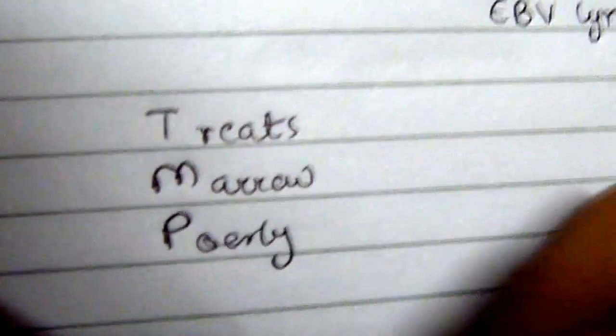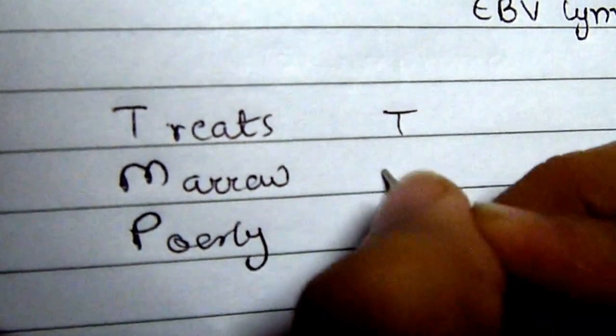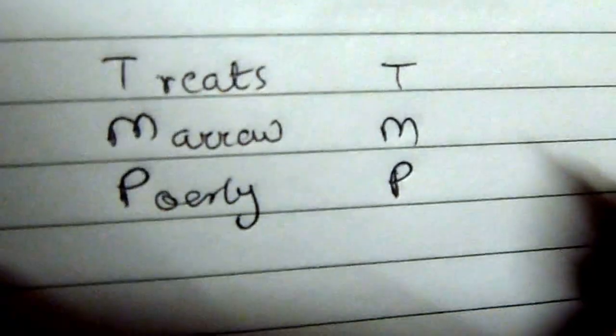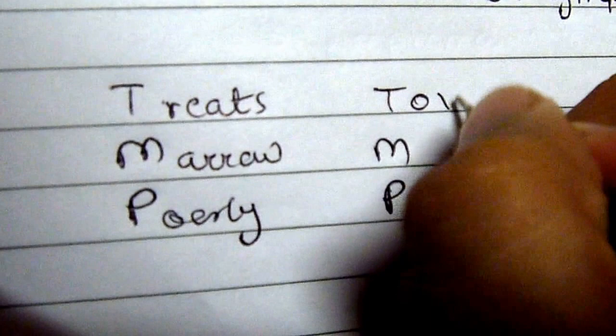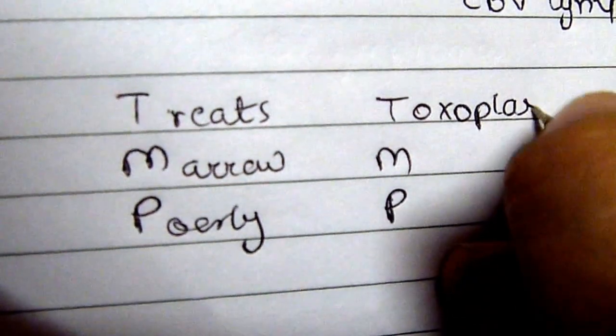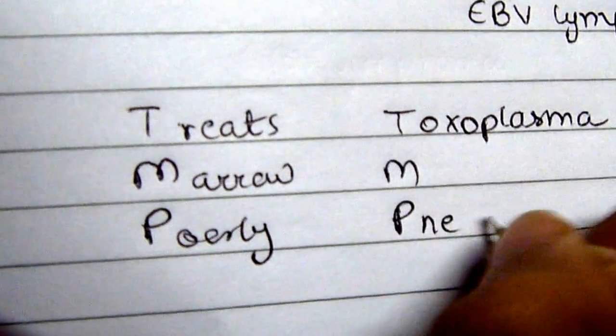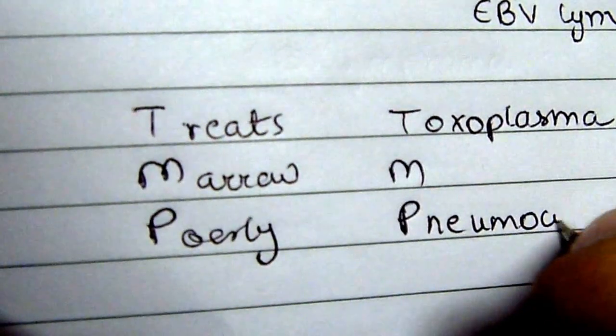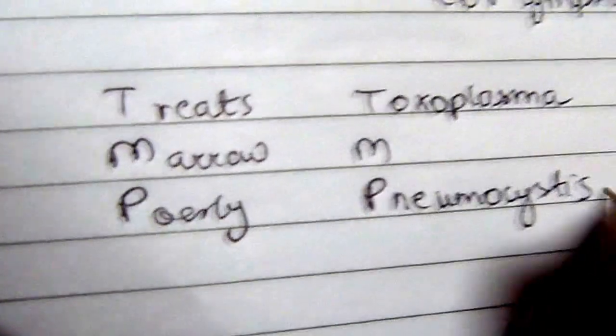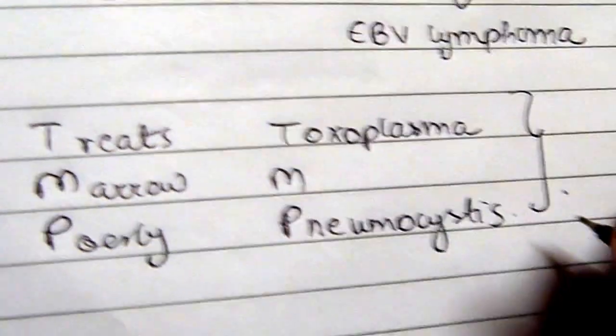The other way of remembering TMP-SMX is the infections they prevent, and that is toxoplasma and pneumocystis. This is predominantly in HIV-positive patients and it is used prophylactically.